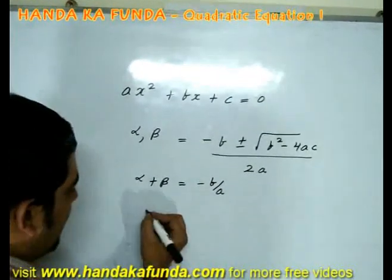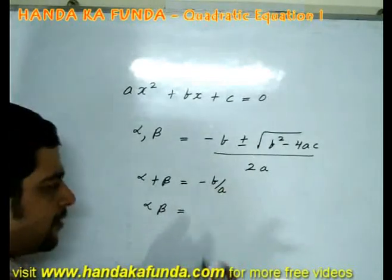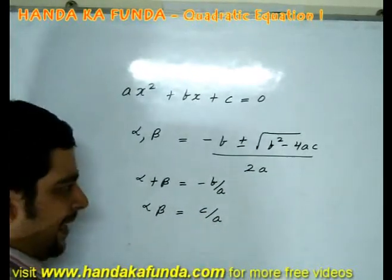The product of the roots, that is alpha into beta, is given by when we multiply those two roots and you will get c by a.